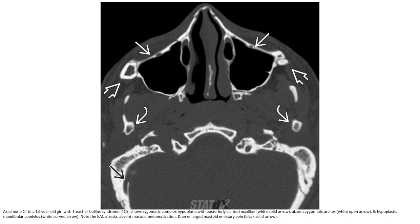Axial bone CT in a 13-year-old girl with Treacher Collins syndrome, showing zygomatic complex hypoplasia, with posterior slanted maxilla, absent zygomatic arch, and hypoplastic mandibular condyle. Note the EAC atresia, absent mastoid pneumatization, and enlarged mastoid emissary vein.